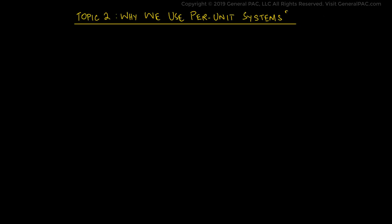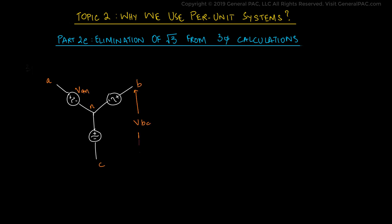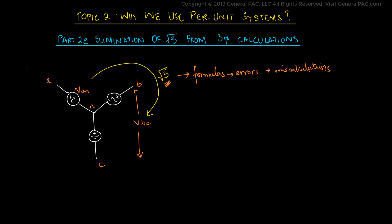Why we use per unit systems, part 2e: Elimination of the square root of 3 from three phase calculations. In this video we will demonstrate the fourth and final advantage of using per unit systems in power system calculations. In order to perform power system analysis of three phase systems, we have to perform per phase and line to line conversions that involve a factor of square root of 3. There are formulas to achieve this, but it is quite prone to errors and miscalculations due to an irrational number being present, i.e. the square root of 3.